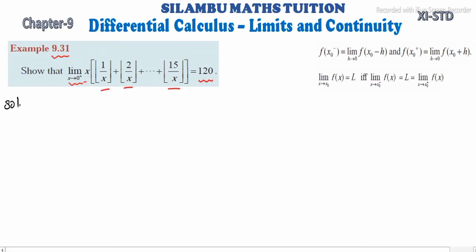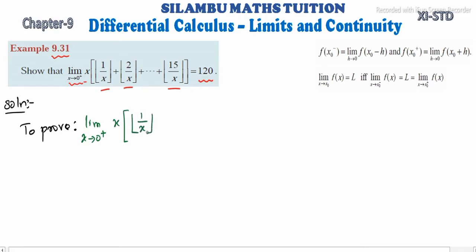See the solution. First, let us write what we need to prove. To prove: limit x tends to 0 plus of x into [⌊1/x⌋ + ⌊2/x⌋ + ... + ⌊15/x⌋] is equal to 120.